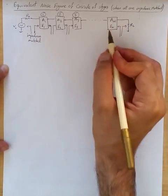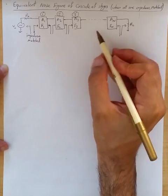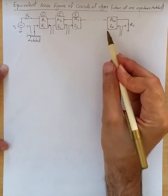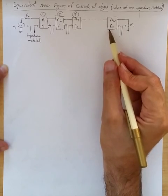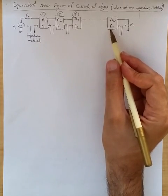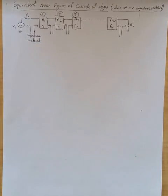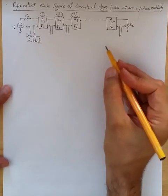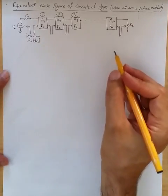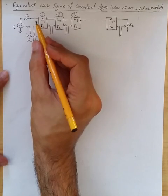And then, because these thermal noises are independent from each other, we can simply say if they are input referred to the input of stage 1, then we can just simply say the total noise at input to stage 1.